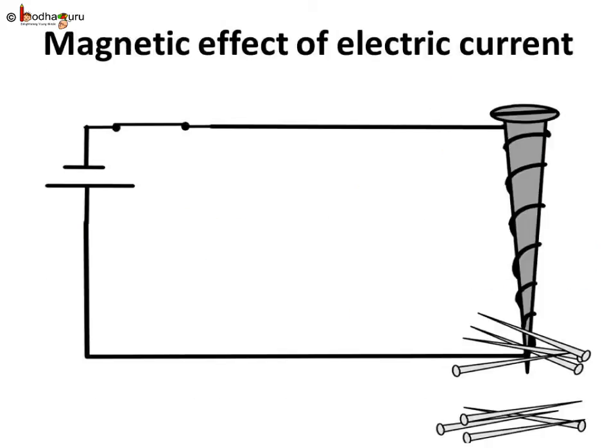Now, we know when the electric current passes through a wire, it behaves like a magnet. This is the magnetic effect of the electric current. And, a current carrying coil of an insulated wire wound around a piece of iron is called an electromagnet. Thus, the insulated copper wire wound around the iron nail and current flowing through it was indeed an electromagnet.